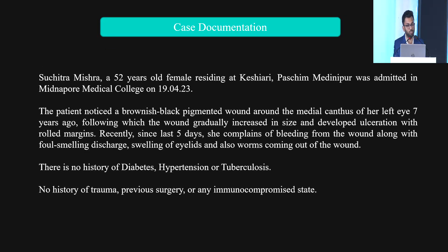Suchitra Misra, a 52-year-old female, was admitted to our Middampur Medical College. She had noticed a brownish-black pigmented wound around the medial canthus of her left eye 7 years ago, following which the wound gradually increased in size and developed ulceration. Since the last five days, she complained of bleeding from the wound, along with foul-smelling discharge and worms coming out of the wound. There was no history of diabetes, hypertension, tuberculosis, trauma, previous surgery, or any immunocompromised state.